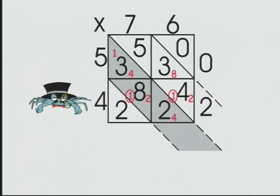2 plus 2, 4. Record. Move our thousands to the thousands column. 1 plus 2, 3. Record.